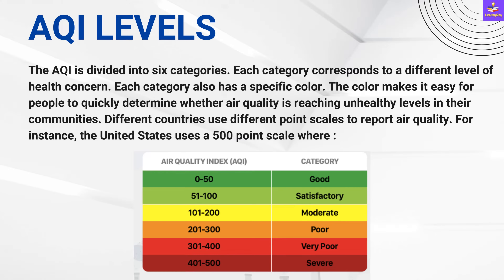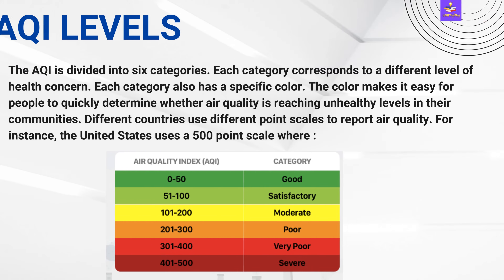Different countries use different point scales to report air quality. For example, the United States uses a 500-point scale wherein AQI between 0 to 50 is good, 51 to 100 is satisfactory, 101 to 200 is moderate, 201 to 300 is poor, 301 to 400 is very poor, and 401 to 500 is severe.